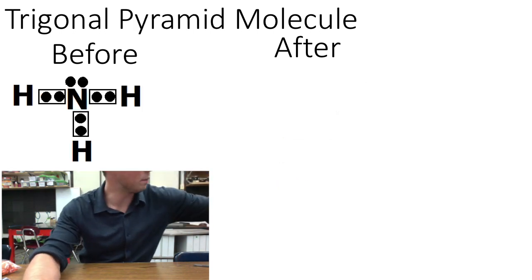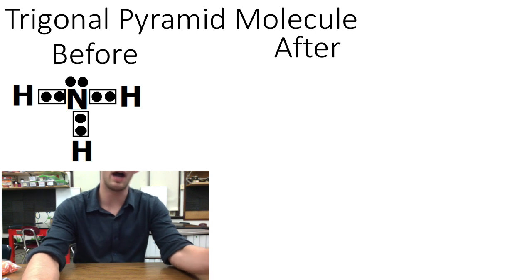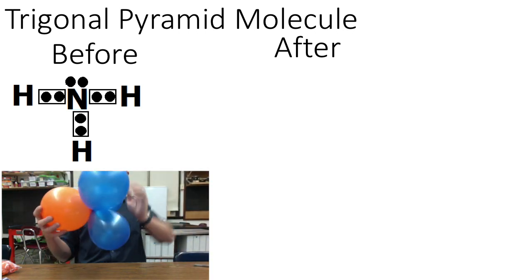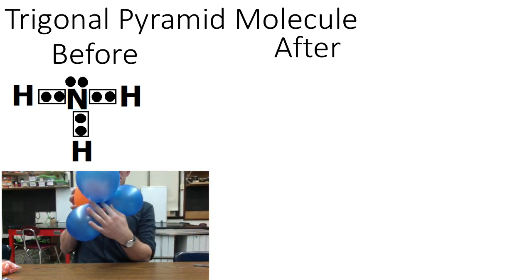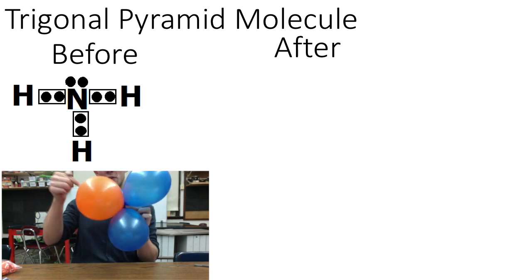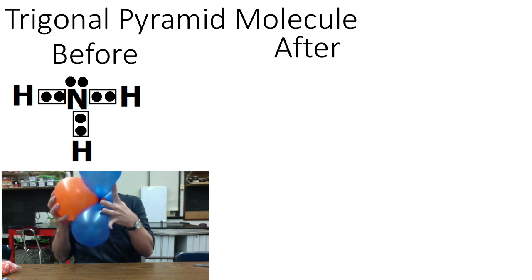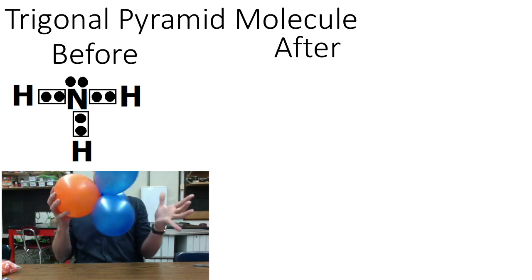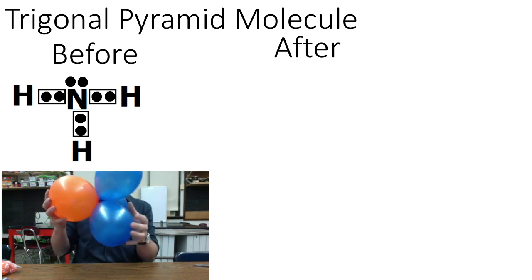A trigonal pyramid molecule, on the other hand, also has three atoms bonded to a central atom. However, the central atom also has a lone pair of electrons, which will repel the three bonded atoms downward.